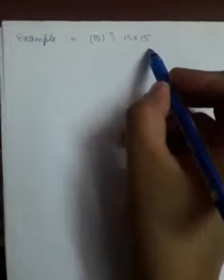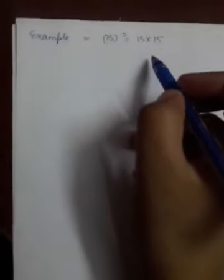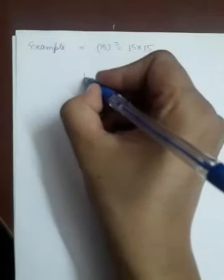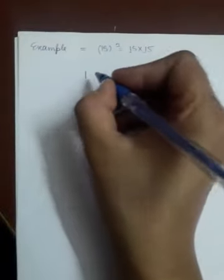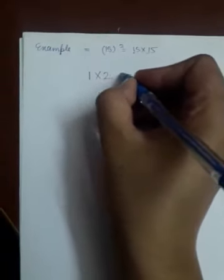Now take one example, 15 square. 15 into 15. How will we do the squaring of this number? First of all see the first digit that is 1 here. So first digit is 1. Now you will multiply 1 with one number greater that is 2. This comes to be 2.